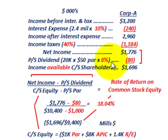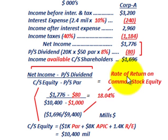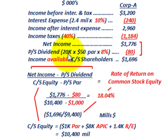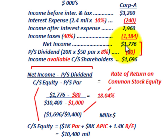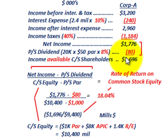The key when working with the rate of return on common stock equity is that we take our net income and subtract out the preferred stock dividends. We have 20,000 shares at a $50 par value and an 8% dividend rate, so that's $80,000. Subtracting that from our net income of $1,776,000, we come up with income available to common stock shareholders of $1,696,000.